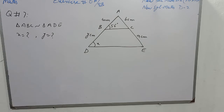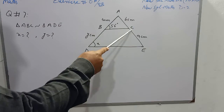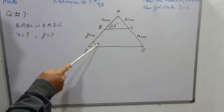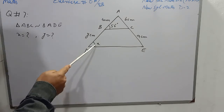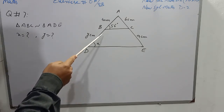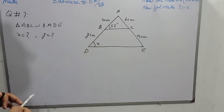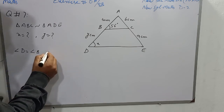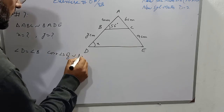Question number 7 of the same exercise: in the figure, triangle ABC is similar to triangle ADE, and we have to find the value of X and Y. If triangle ABC and ADE are similar, then angle D will be equal to angle B, because both are corresponding angles of similar triangles. So the value of X will be 56 degrees: angle D is equal to angle B, and the reason is corresponding angles of similar triangles.